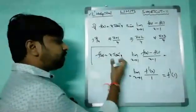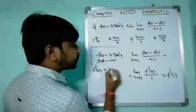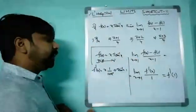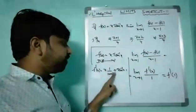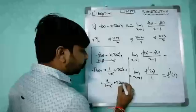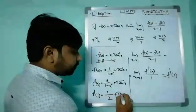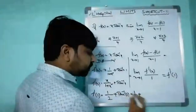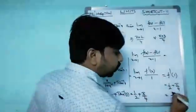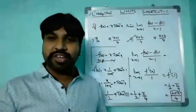Now we need to find f'(1). Given f(x) = x·tan⁻¹x, differentiating using the product rule: f'(x) = x · (1/(1+x²)) + tan⁻¹x · 1 = x/(1+x²) + tan⁻¹x. Substituting x = 1: f'(1) = 1/(1+1) + tan⁻¹(1) = 1/2 + π/4. Taking LCM 4: the answer is (2 + π)/4, i.e., (π + 2)/4. That is the third option. Thank you, that's all for today's class.